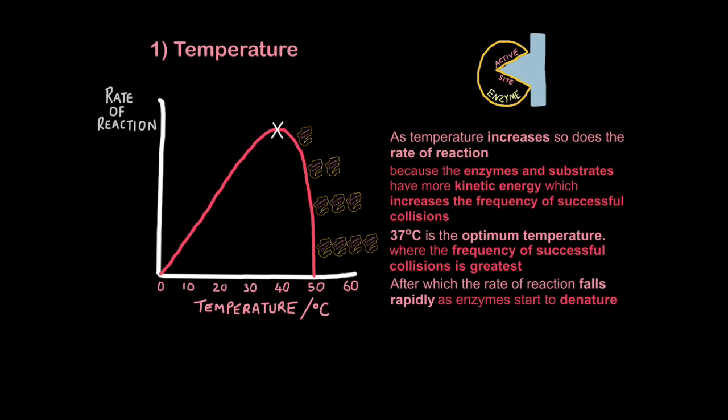So that explains this part of the graph. Now we're over here. You'll notice this is at 37 degrees Celsius, our human body temperature. So for this enzyme, 37 degrees Celsius is the optimum temperature. That means where the frequency of successful collisions is greatest. In other words, where the enzyme works best. Be aware that 37 degrees Celsius is the optimum temperature for human enzymes, but if you're an arctic ice fish, then it would make sense that the optimum temperature for their enzymes is much lower.